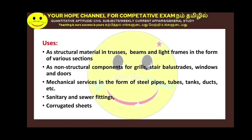General purpose uses: structural materials in construction — trusses, beams, light frames — in the form of various sections: T-section, L-section. Non-structural components: grills, gates, staircases, handrails, and steps. Also windows and doors. Mechanical services: steel pipes, tubes, tanks. Sanitary and sewer fittings. Corrugated sheets for roofing material.